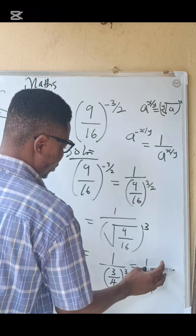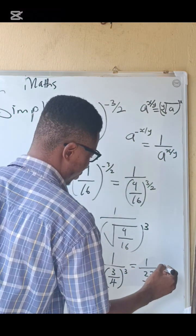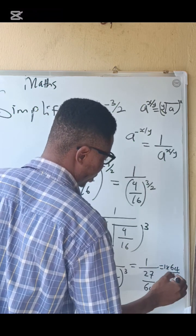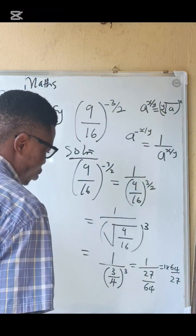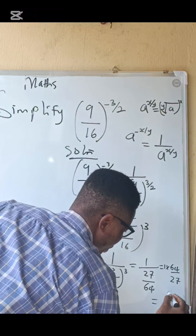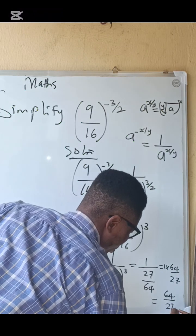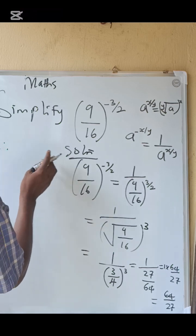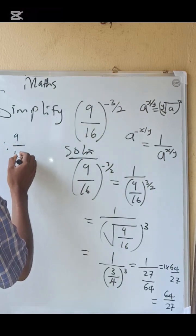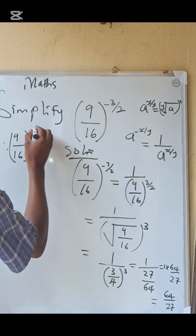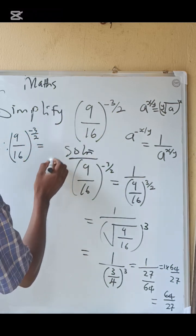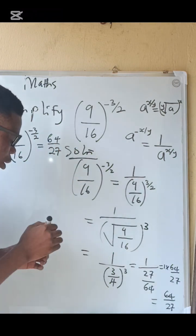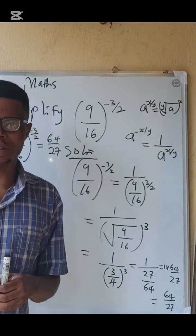Remember that we can change from division to multiplication. So we have 1 multiplied by 64 divided by 27, and the final answer becomes 64 over 27. Therefore, 9 over 16 raised to the power of minus 3 over 2 equals 64 over 27.